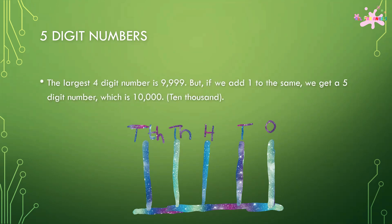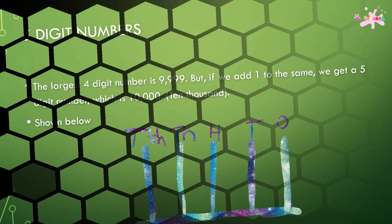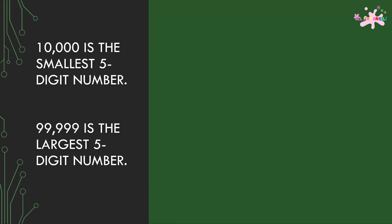The largest 4-digit number is 9,999. But if we add one to the same, we get a 5-digit number which is 10,000, as shown below. 10,000 is the smallest 5-digit number, and 99,999 is the largest 5-digit number.